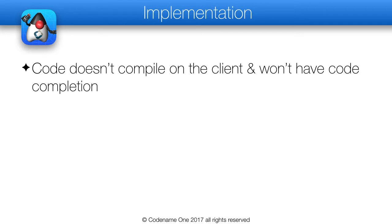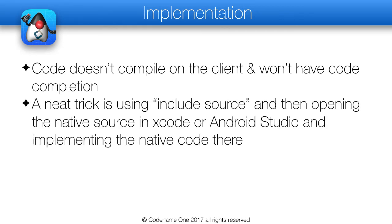So how does it work? Normally Codename 1 sends only bytecode to the servers, but in the case of native interfaces the native source must be sent to the server where we can compile it with the native compiler. So even if you have a PC you can write Objective-C code and it will compile in the cloud. But this creates a situation where code completion won't work — the source will be highlighted in red as if it can't compile even if you have the right SDKs installed. One of the tricks we use is to send a build with include source, implement the native interface in the native IDE, test and debug it, then copy and paste the debugged source back into the native directory.